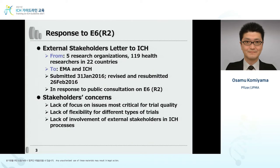The direct trigger for GCP renovation was a letter to ICH from external stakeholders. The letter was sent from 5 research organizations and 119 health researchers in 22 countries to EMA and ICH headquarters during the public consultation period of draft E6R2. The key points of the letter address perspectives lacking in GCP: lack of focus on issues most critical for trial quality, and lack of flexibility — meaning more explicit recommendations should be made to focus on what is critical and to allocate resources appropriately.